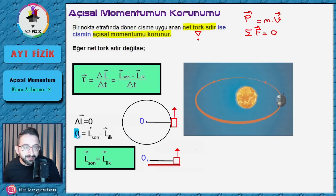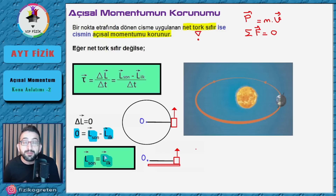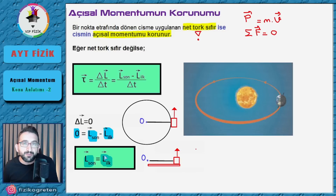Eğer dış tork sıfırsa son momentum ve ilk momentum birbirine eşit olması gerekiyor. Peki bir kuvvetin torku olup olmadığını nasıl anlayacağız? Çok kolay: eğer kuvvetin uzantısı ya da kendisi dönme noktasından geçiyorsa torku yoktur. Dönme noktasından geçmiyorsa muhakkak bir torku vardır.